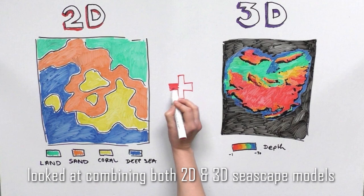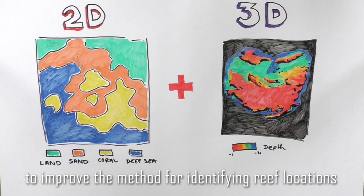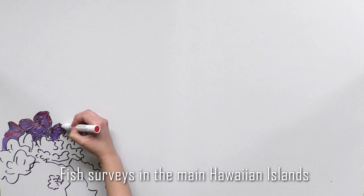A recent paper in Remote Sensing in Ecology and Conservation looked at combining both 2D and 3D seascape models to improve the method for identifying reef locations that should be a priority for management actions.